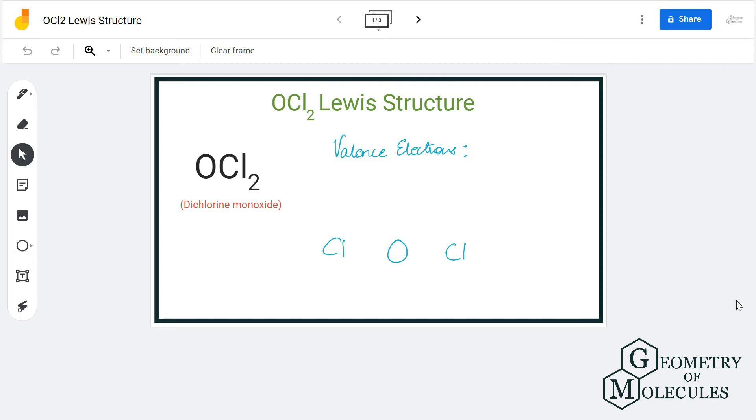Hi guys, today in this video we are going to look at the Lewis structure for dichlorine monoxide. The chemical formula is OCl2, also written as Cl2O. It is an inorganic compound.